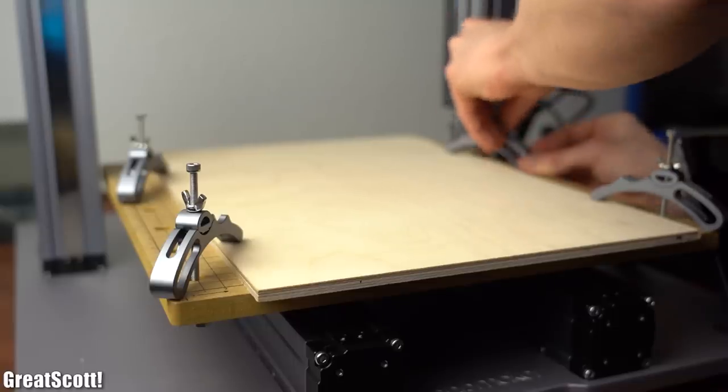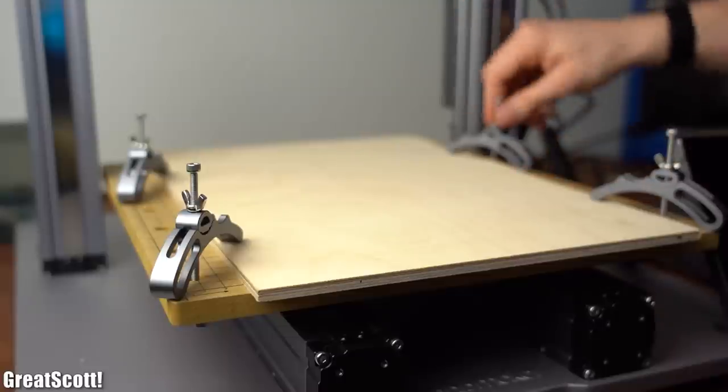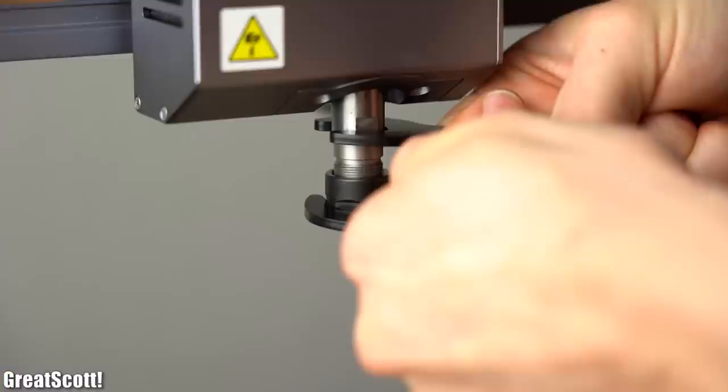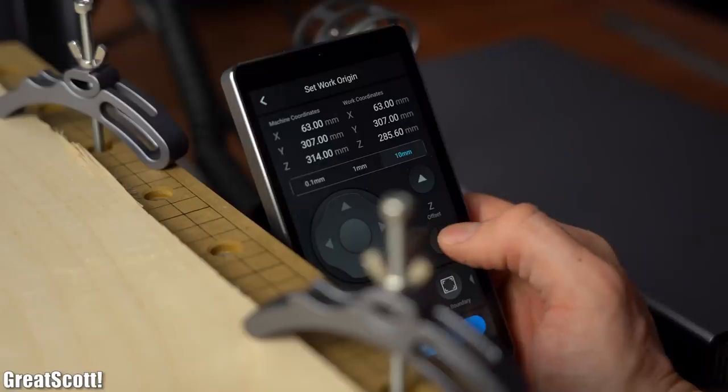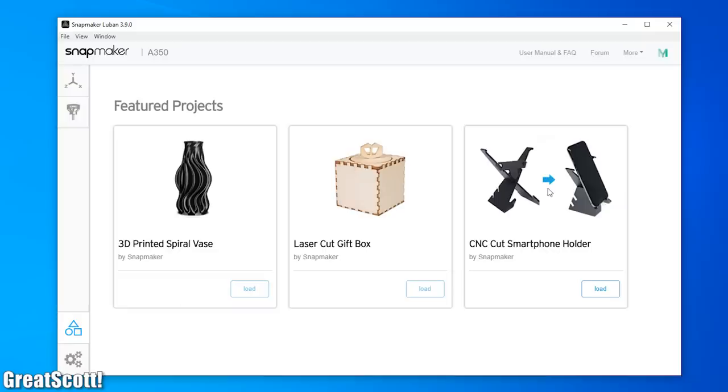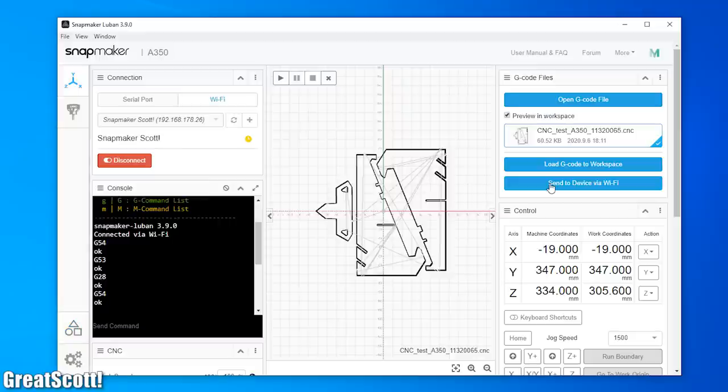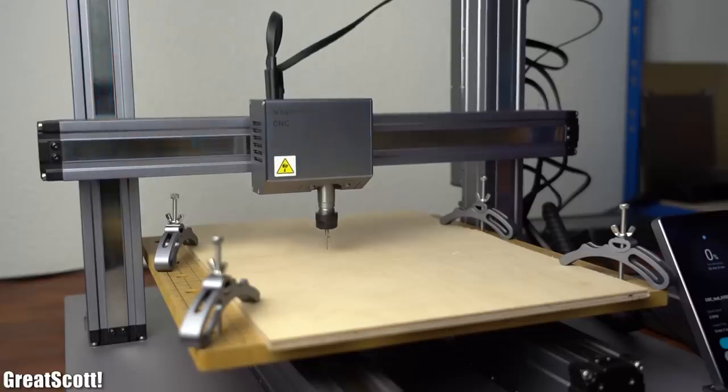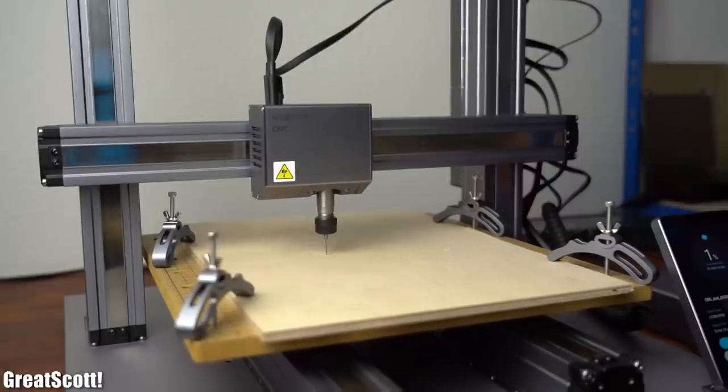To test it I secured a 6mm thick piece of plywood to the work surface with the included clamps, secured the mill to the tool head and used the touch screen to set the work origin on the material. Then I loaded the example project and once again simply clicked upload and as you can see the machine did its job without any problems.